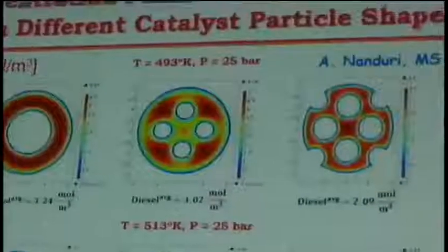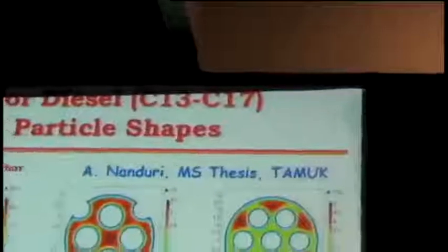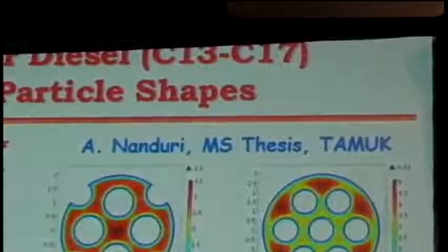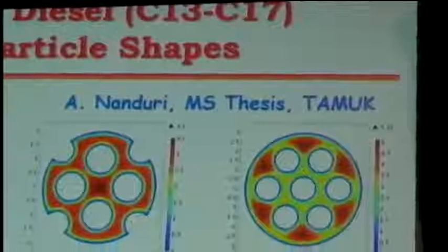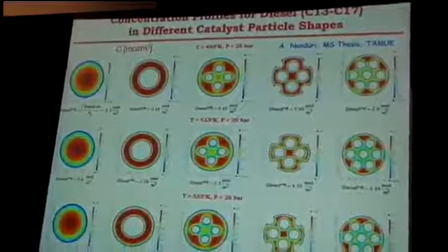This shows, for example, how the concentration profiles for diesel — the C13 to C17 range — vary in different particle shapes. This is work done by one of my students. We looked in great detail at the impact of particle shape on performance. You really can't assess it until you've put these into an appropriate reactor model. We can show that there is a shape that can in fact improve performance over the conventional solid spheres which are commonly used.